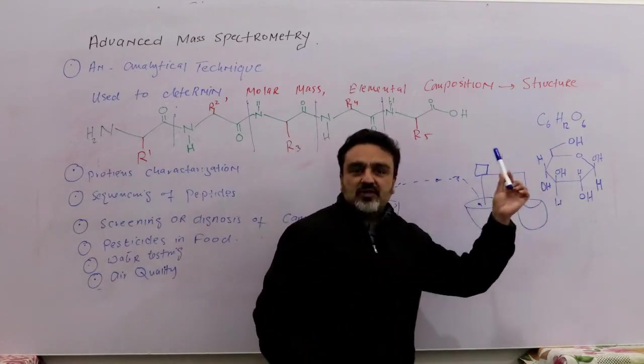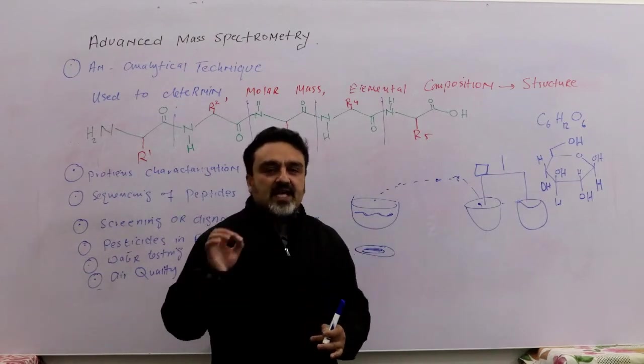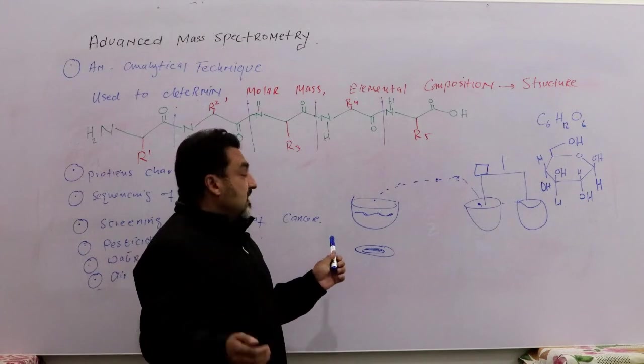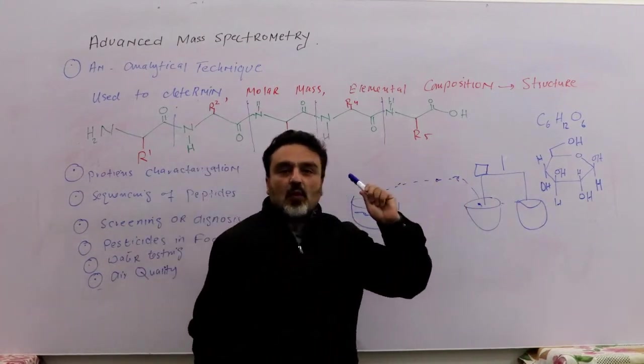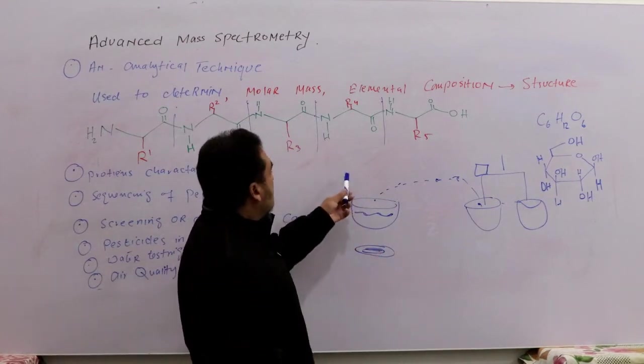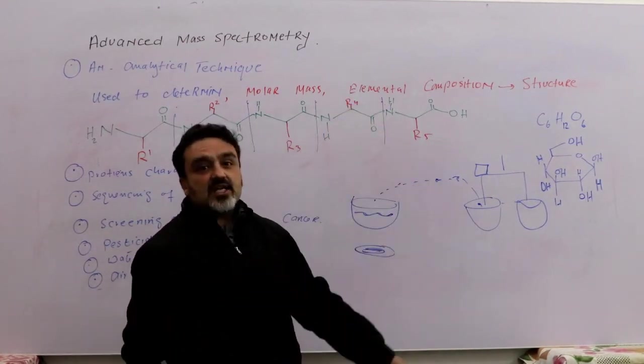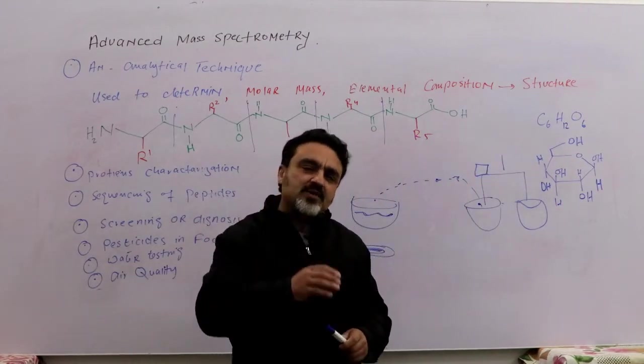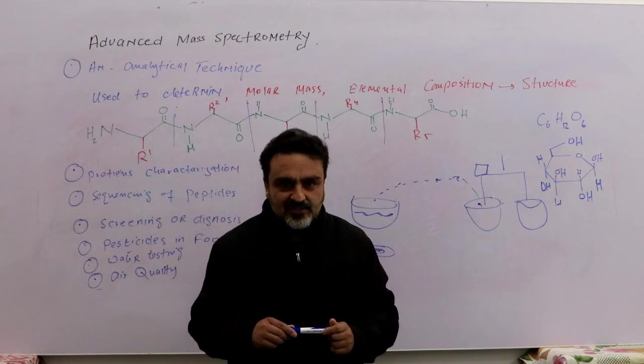You go to the mass spectrometry lab and the mass spectrometer will show you what is the weight of this molecule. But more importantly, it will also tell you what is its elemental composition: how many carbons, how many hydrogens, how many oxygens are present in it. Again, isn't it a magic? It sounds like magic, but no, it's a reality.